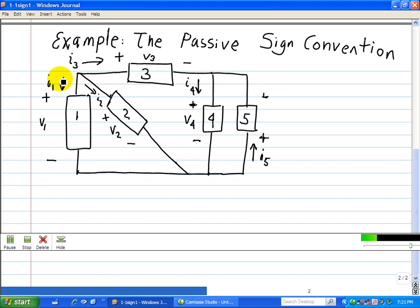Once you assign a reference direction, that governs the polarities across the device as our reference. Or, if you assign your polarities for a given voltage, then that governs a given direction through that device.